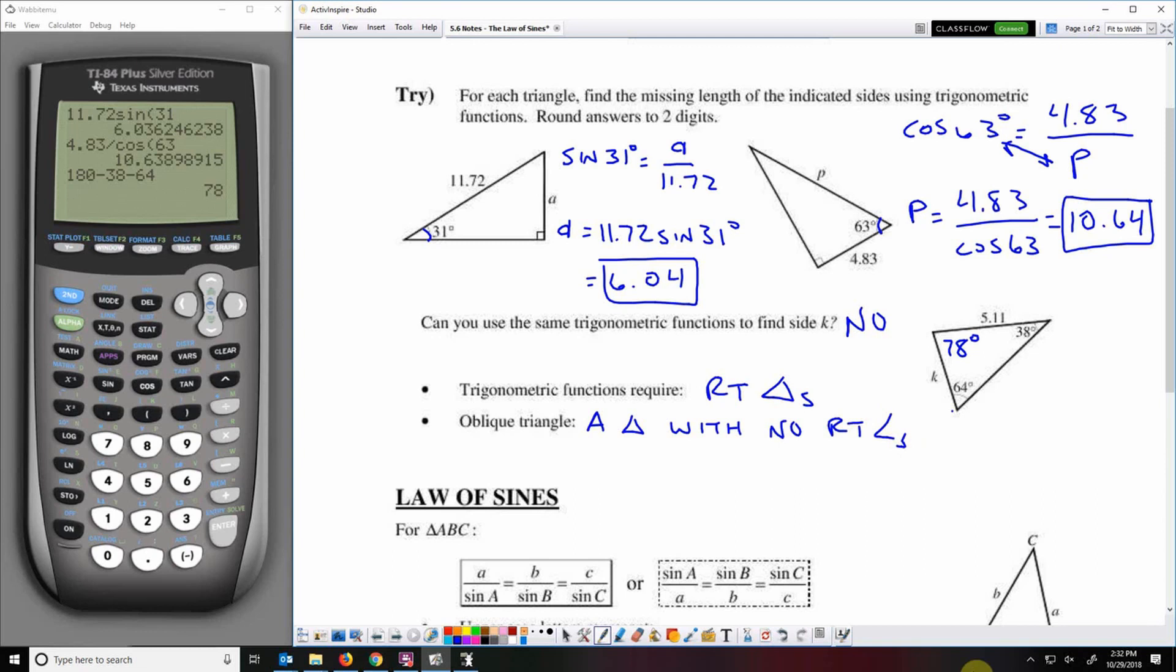So in an oblique triangle we can't just use sine cosine and tangent but one thing that we can use is the law of sines.